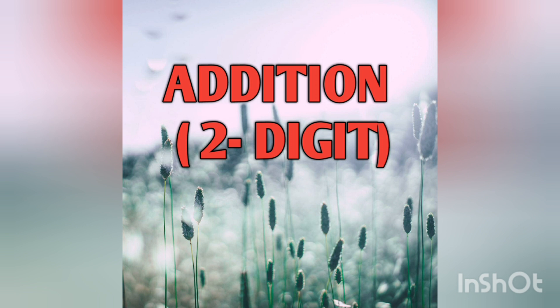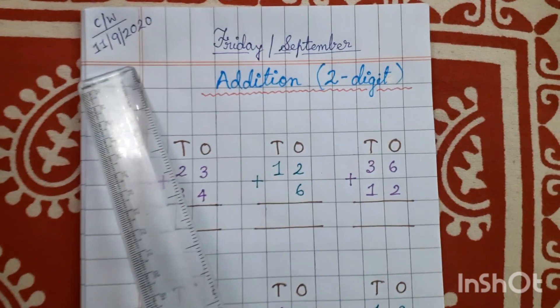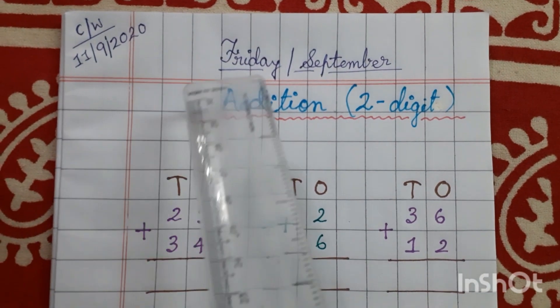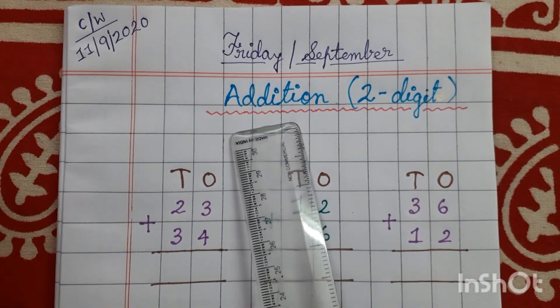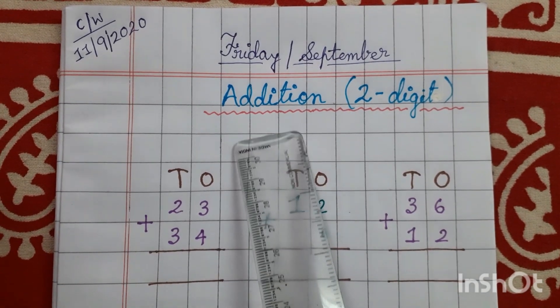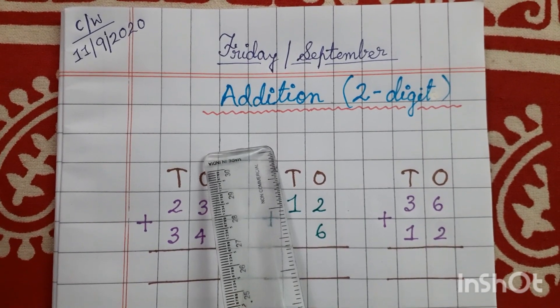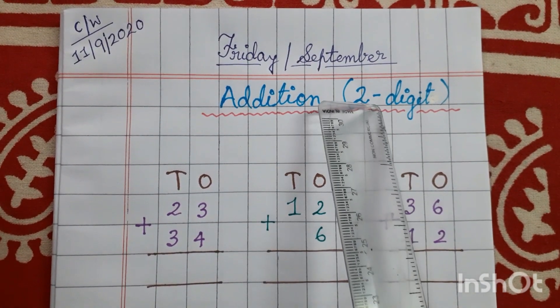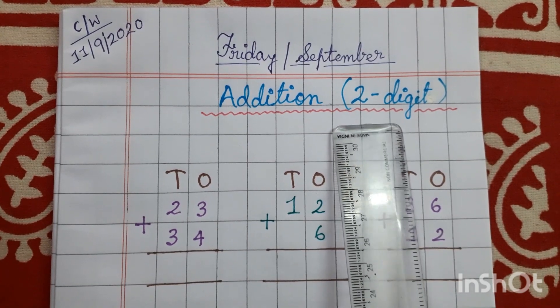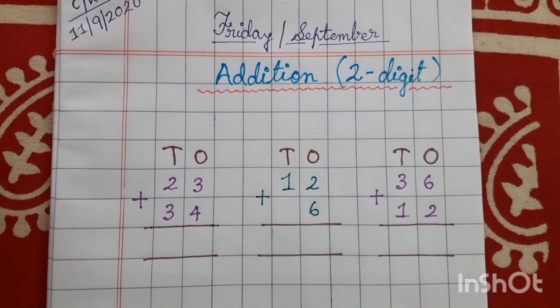This is addition of two-digit numbers, okay? Follow me for the classwork. Here you can see CW and date, you all will write this, then comes the day and month. After that we have written the heading, let's read: addition, A-D-D-I-T-I-O-N, addition, two hyphen digit, D-I-G-I-T. This is going to be addition of two digits.